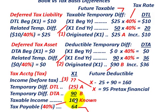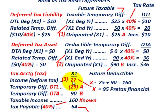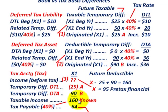We're going to be given our taxable income, and then we're going to have to determine the change in those temporary differences that originate during the year, and then we'll back into the income before taxes. That's how we're going to reconcile our pre-tax financial income with our taxable income.